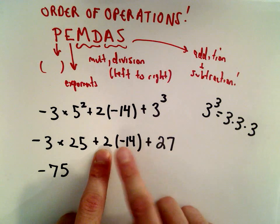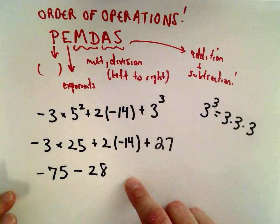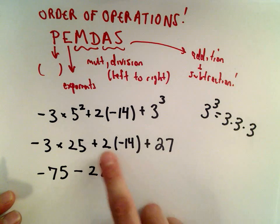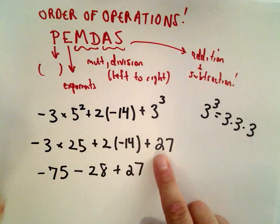Likewise, positive 2 multiplied by negative 14, that's going to give me negative 28. A positive times a negative is a negative. 2 times 14 is 28, plus 27.